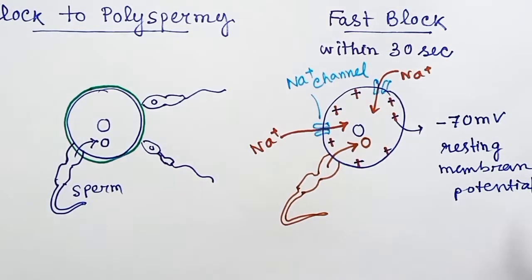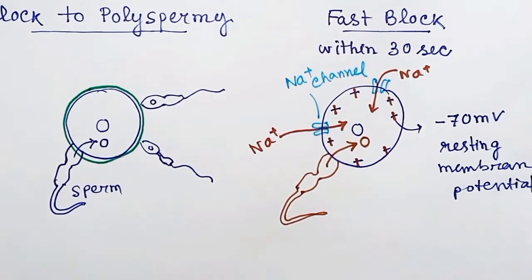Because of this influx of the positive charge as sodium ions, the membrane potential of the ovum changes. Due to this change in membrane potential from negative to positive, the further entry of multiple sperms is blocked within 30 seconds.